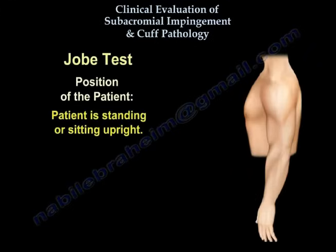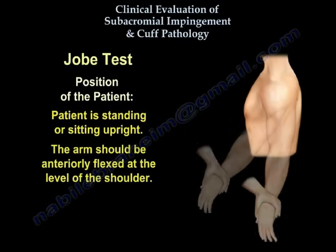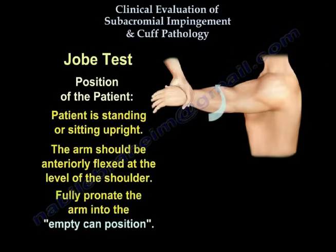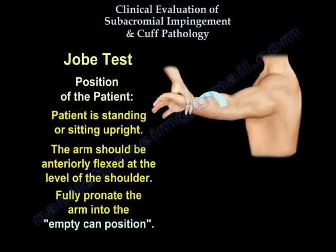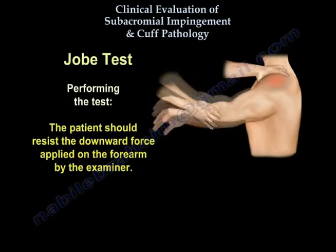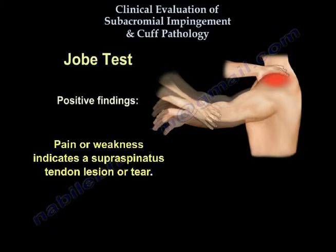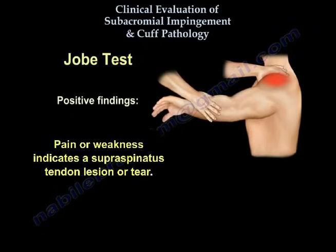Empty can test. The patient is standing or sitting upright with the arm anteriorly flexed at the level of the shoulder. Fully pronate the arm into the empty can position. The patient should resist the downward force applied to the forearm by the examiner. Pain or weakness indicates a supraspinatus tendon lesion or tear.